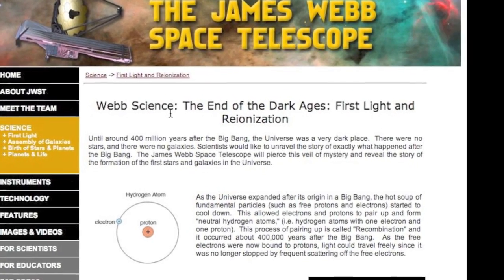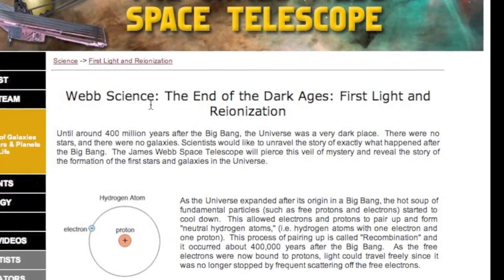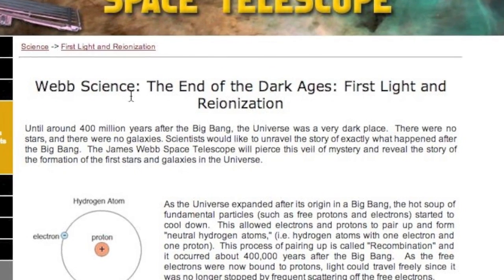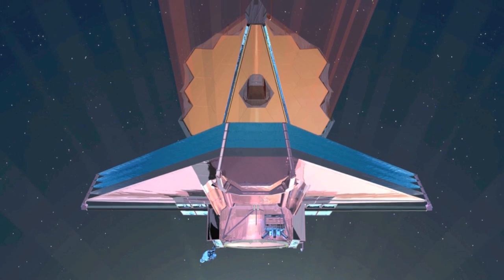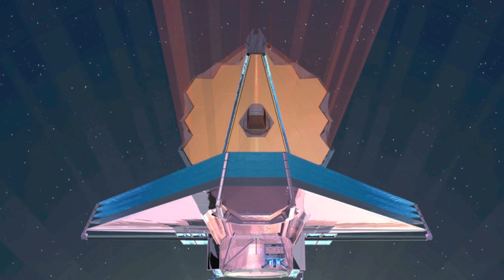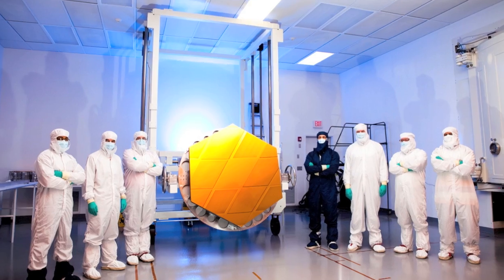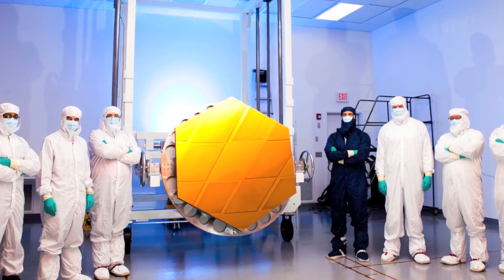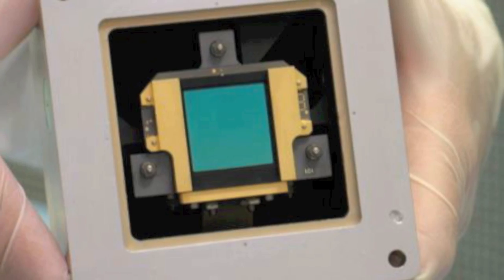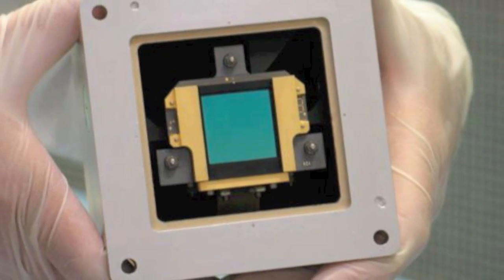Our window into this period is currently being built: the James Webb Space Telescope. Designed as the successor to the Hubble Space Telescope, it will look primarily in the infrared, a wavelength rich in information about the universe when the earliest stars and galaxies were forming.